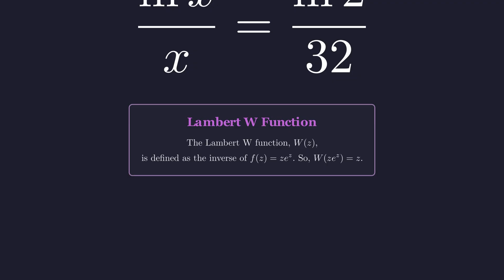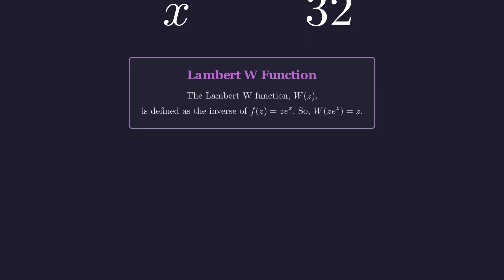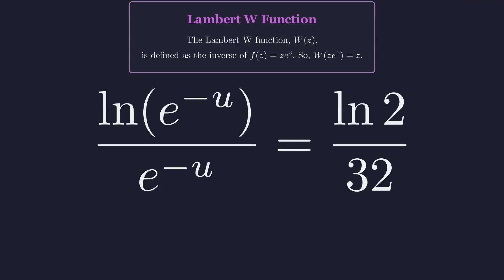It's defined as the inverse function to z times e to the z. Our goal is to rearrange our equation into the form z times e to the z. Let's make a substitution. Let x equal e to the power of negative u. Substituting this into our equation gives the logarithm of e to the negative u divided by e to the negative u.